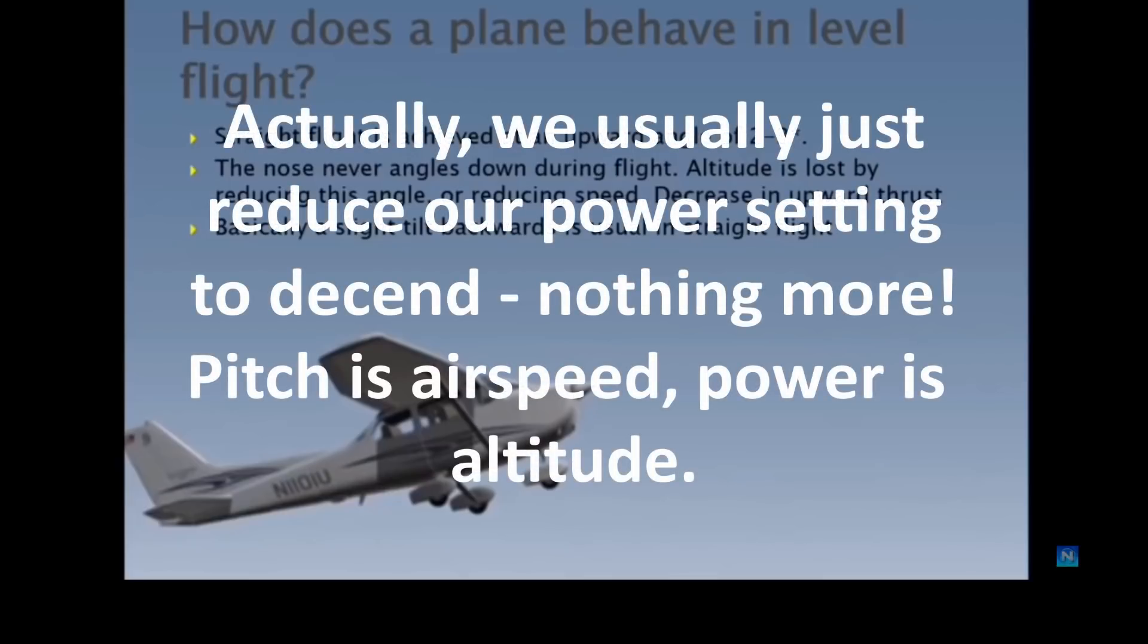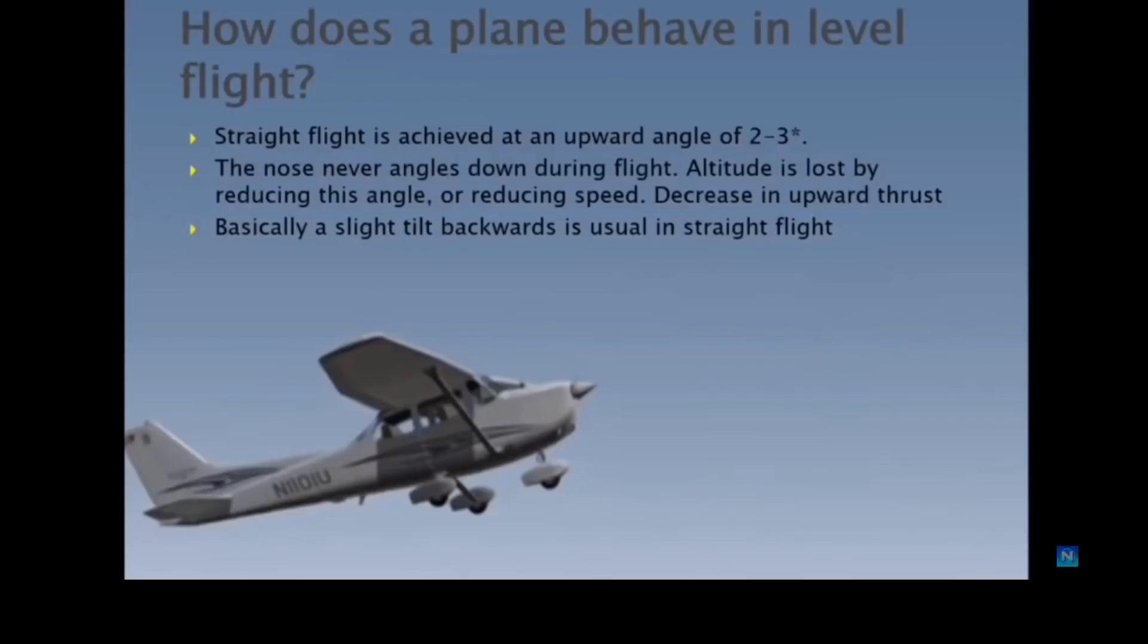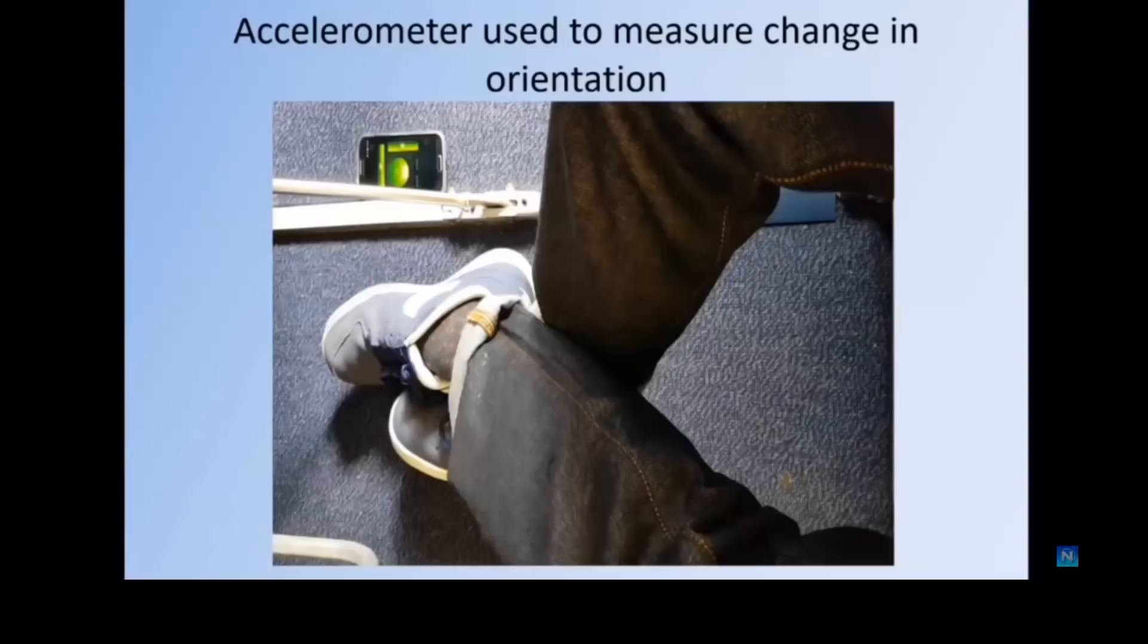The way in which altitude is lost is by reducing this angle of attack or reducing speed or combinations of both, and that results in a decrease in upward thrust. You can lose your ability to maintain level flight and effect a slight drop. So basically a slight tilt backwards is usual for straight and level flight. And by straight and level, I mean a vector. Roger, Roger. What's our vector, Victor? That is straight and level and how we experience it.